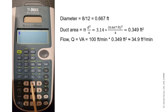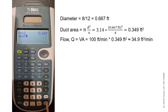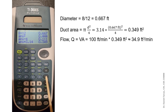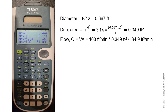We have to learn to do the calculation really fast on our calculator. For this example, the diameter is 8 divided by 12, which equals 0.667 feet. We square the answer and divide by 4, then multiply with 3.14, which is π, to find the duct area. Then multiply with 100 feet per minute to find the flow value, which is approximately 34.9 cubic feet per minute. Save time during the exam by learning to be fast on your calculator.